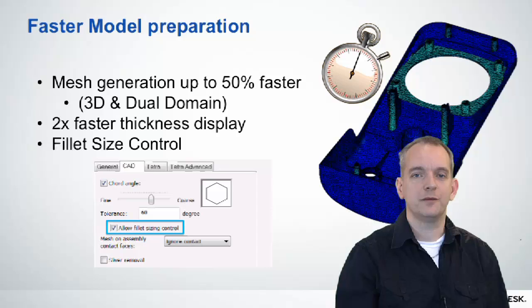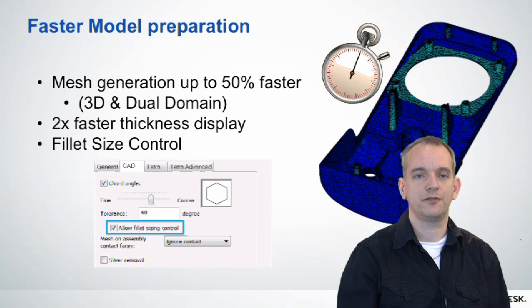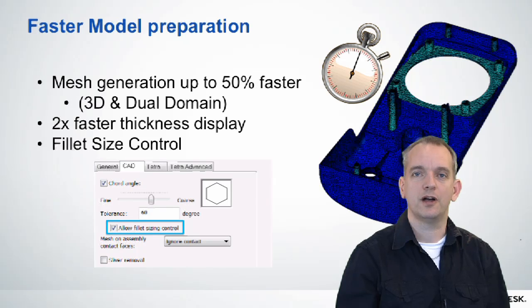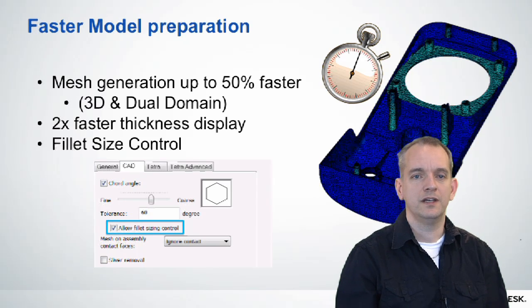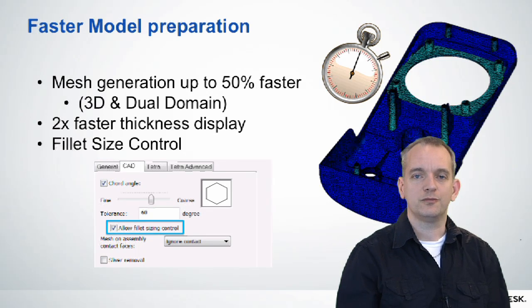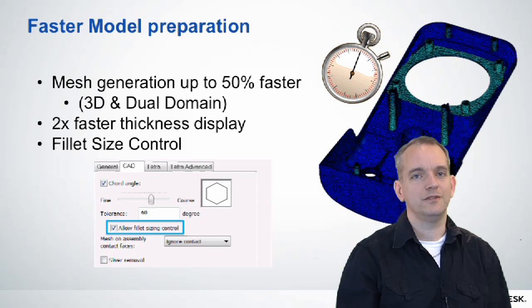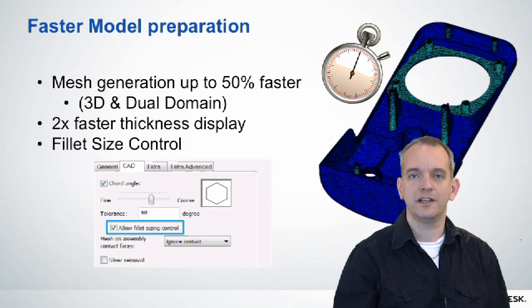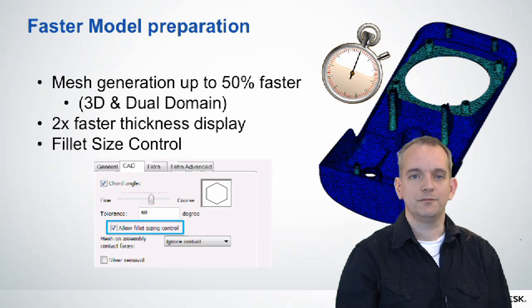We also made a lot of improvements in our mesh preparation. Mesh generation is up to 50% faster, particularly for 3D and dual domain — and it's particularly quicker when you have larger models, exactly where you need it to be. Larger models will now take substantially less time to prepare through parallelization and other smart enhancements. We also made improvements in displaying thickness — the thickness display is now up to around 2 times faster than before. Additionally, there's a new option called Fillet Size Control that creates better quality meshes at a lower element number, particularly around fillet and rounded areas.